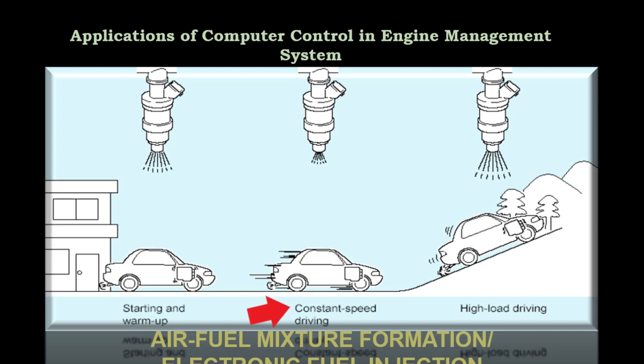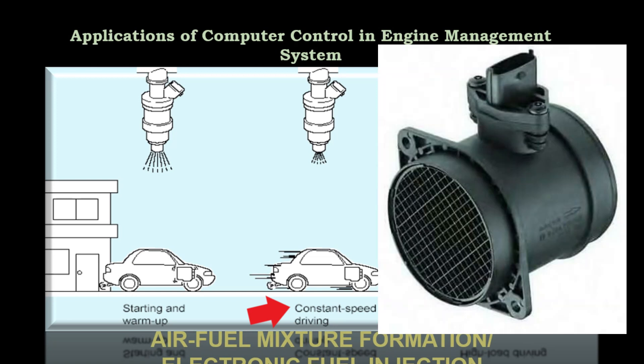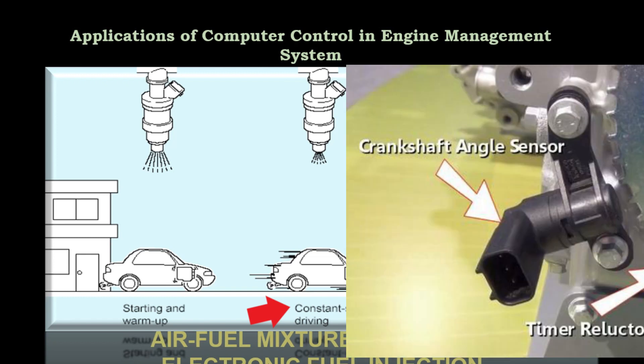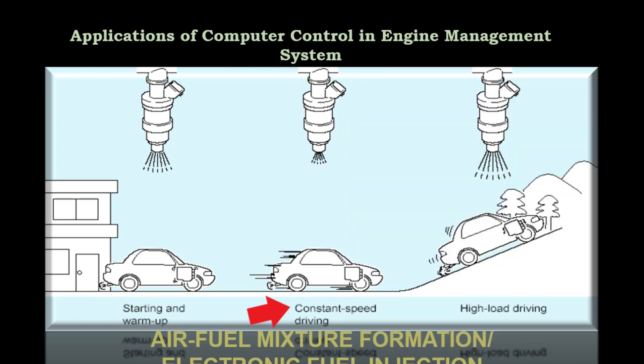At constant driving, the amount of fuel injected depends on the amount of air entering the cylinders, position of the throttle valve, and engine speed. The ECM gets this information through the mass airflow sensor, manifold absolute pressure sensor, throttle position sensor, and crankshaft position sensor. During high-load driving, such as when the vehicle is driving uphill, the ECM commands the injectors to inject extra fuel to increase engine power. The ECM detects high load conditions through the various sensors.